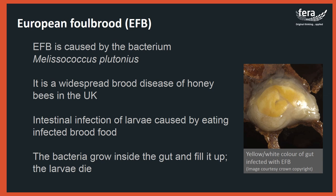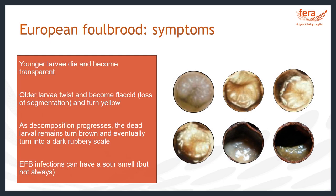Honey bee brood becomes infected with EFB when it ingests bacteria from infected brood food. The bacteria cause an intestinal infection whereby the bacteria grow up inside the gut and kill the developing larvae. If infected with sufficient numbers of bacteria, the larvae will become visibly diseased and die at around four to five days old. The earlier stage larvae may become transparent when they die, while older larvae will become twisted in their cells and lose their clear segmentation pattern — we call this melting down.